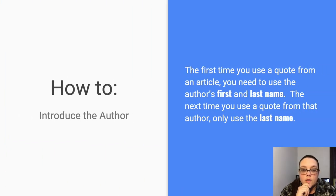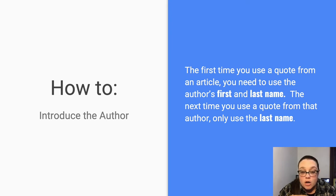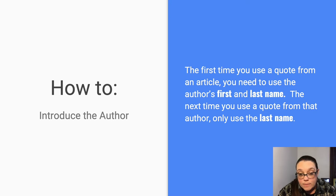How do you introduce the author? The first time you use a quote from an article, you need to use the author's first and last name. Then anytime after that that you mention this author, you can simply use the last name. So if you were introducing an article written by me, you would introduce me as Casey Cameron first, and then anytime after that you would just call me Cameron.